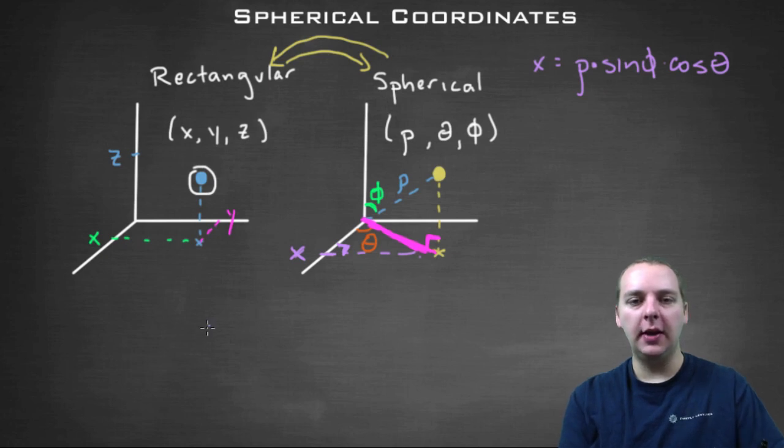And in case that's not clear, let me just make it clear one more time where that came from. In this triangle in the xy plane, cosine of theta is adjacent over hypotenuse. But that hypotenuse there, that was our rho sine phi that we discovered after a little algebra.